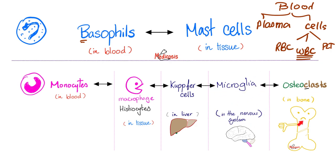And in the bones, what are the cells that eat your bone cells? These are osteoclasts. Osteoclasts with a C will cut down bone with a C, but osteoblasts with a B will build up bones.